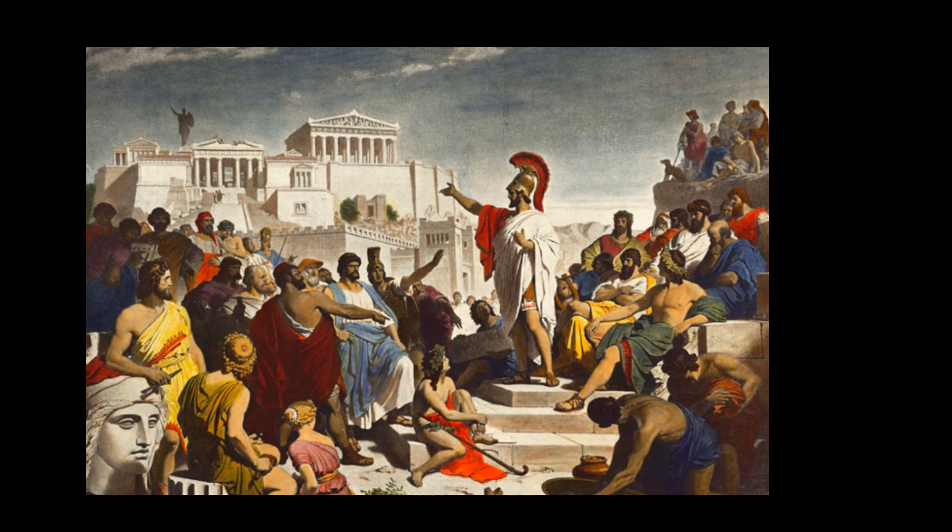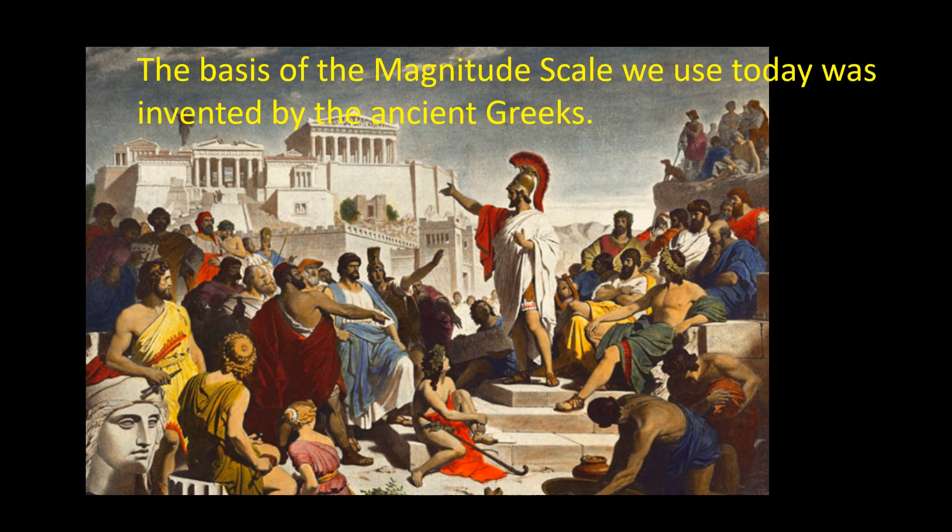When measuring the brightness of objects in the sky, astronomers use the magnitude scale. The basis of the scale we use today was invented by ancient Greek astronomers.